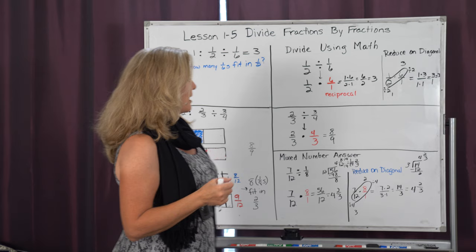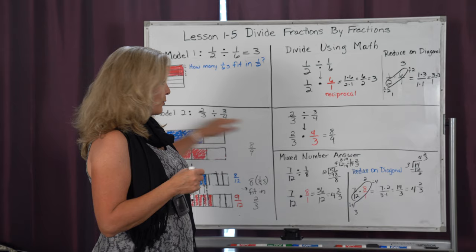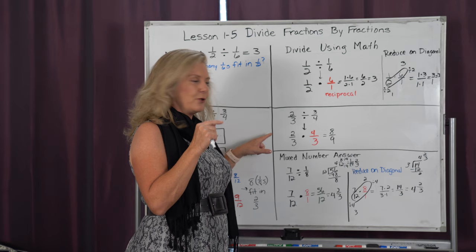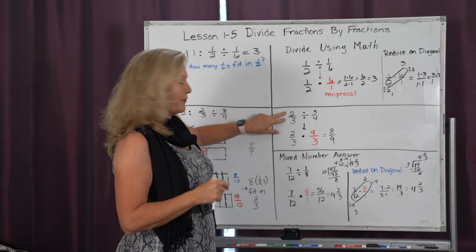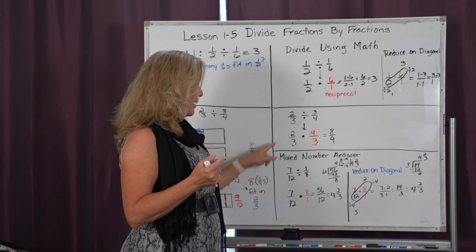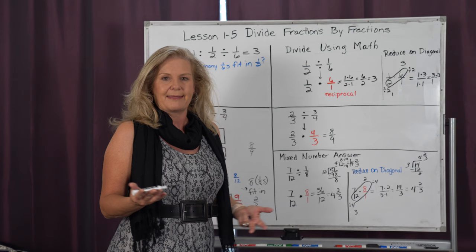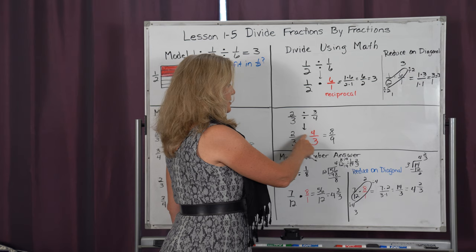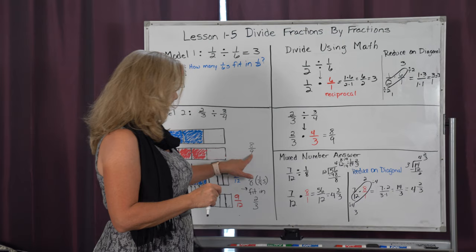Now let's take that second problem and solve it mathematically. Again, we change division to multiplication and multiply by the reciprocal. The first fraction stays the same — two-thirds is two-thirds. I change division to multiplication and take the reciprocal of three-fourths, which is four-thirds. I look at the diagonals — there's no way I can reduce, nothing that can be divided into those numbers. So I simply do numerator times numerator: two times four is eight. Denominator times denominator: three times three is nine. Again, I get the same answer I showed visually.